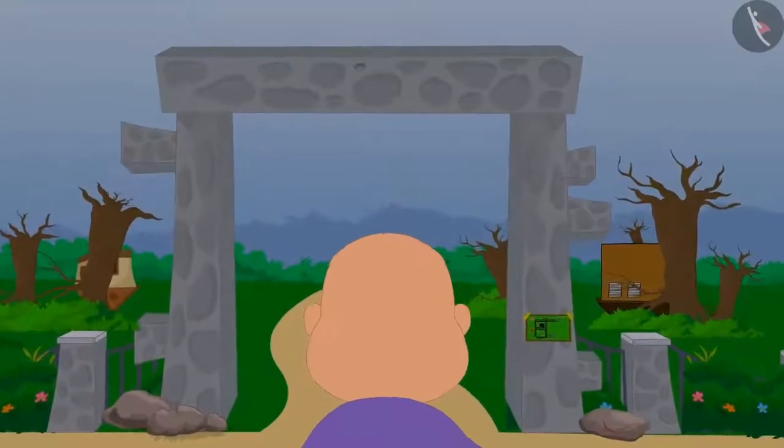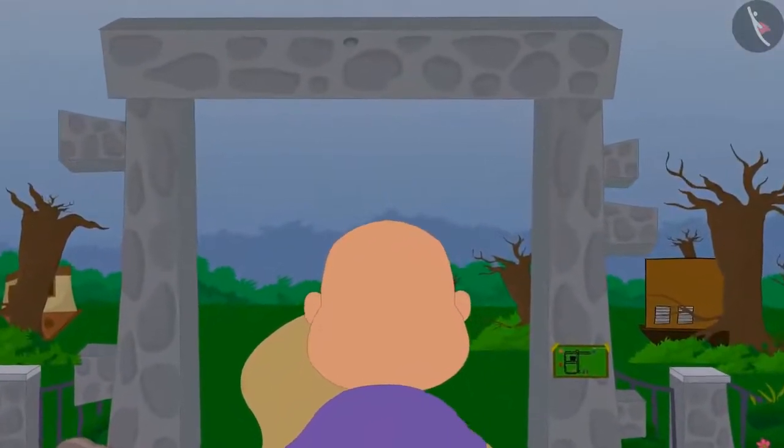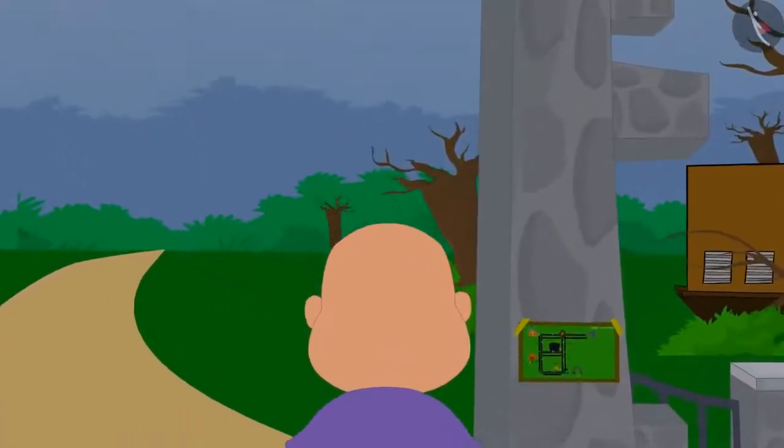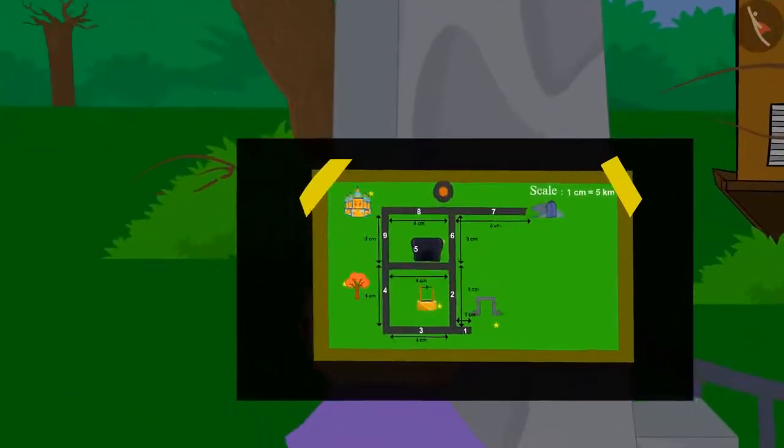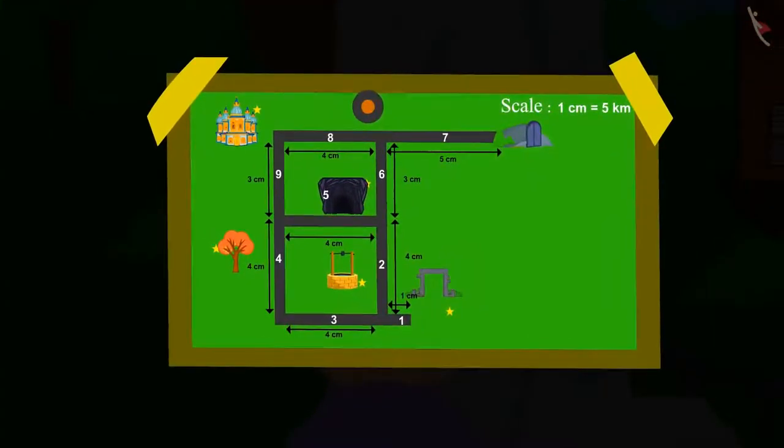One day, Bablu reached the village of Ulta Pulta. As soon as he reached the gate to go inside, he found a map which was upside down.